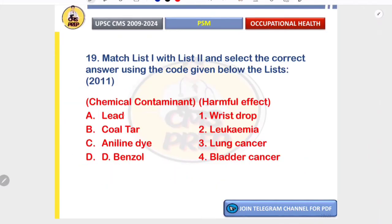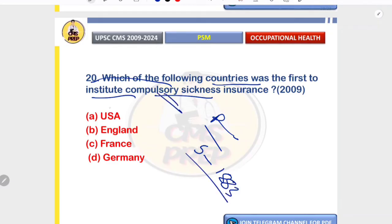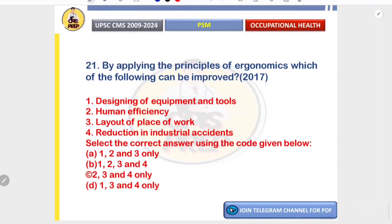Matching: lead → wrist drop; coal tar → lung cancer; aniline dye → bladder cancer; benzene → leukemia. Germany was the first country to institute compulsory sickness allowance — under Otto von Bismarck, the social insurance system was introduced in 1883 covering compulsory sickness insurance for all workers. The USA introduced it in the 1960s with Medicare; England in the 1940s; France after Germany. Correct answer is D — Germany.